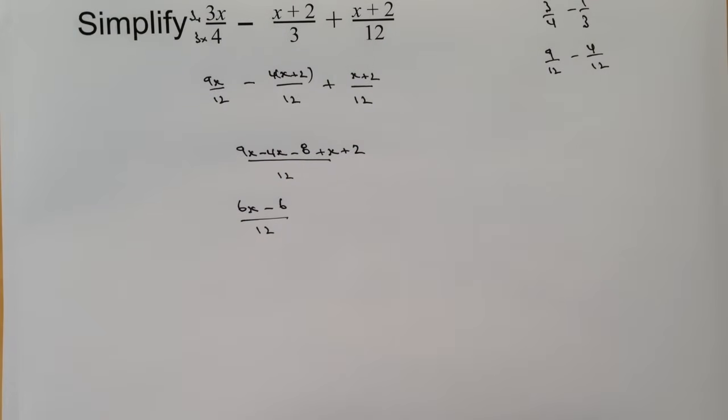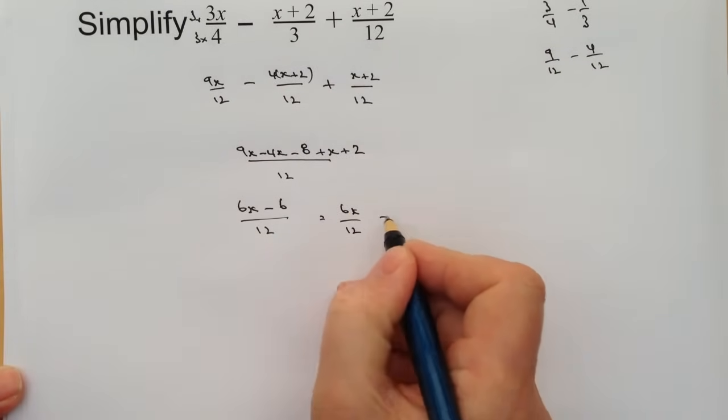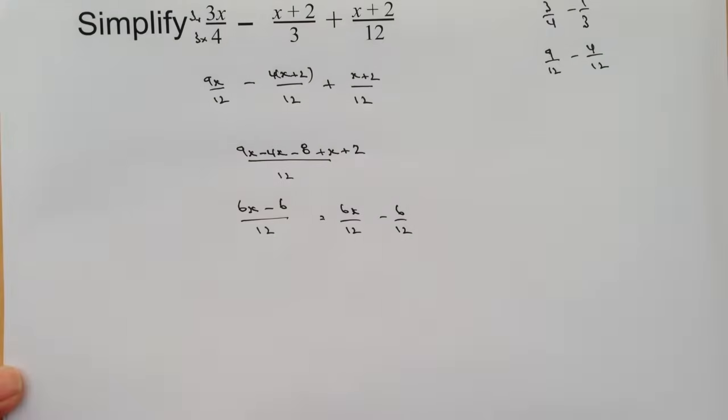That really is the answer. This is probably a 3 mark question, and you'd probably achieve two marks for this because they'd want you to simplify even further. You could say this is the same as 6x over 12 minus 6 over 12, and then you simplify it that way.